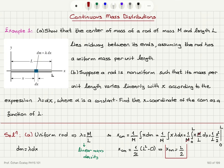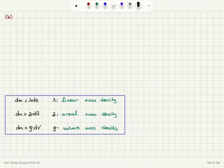Now we look at Part B of the problem, where we have a non-uniform mass distribution. Lambda is a function of x: lambda equals alpha x. Therefore, we can calculate the mass of our differential element dm to be lambda dx, which is alpha x dx.